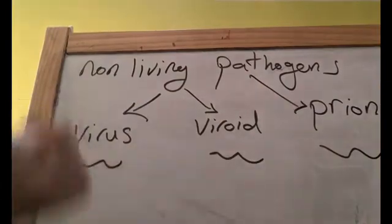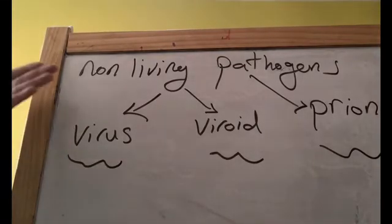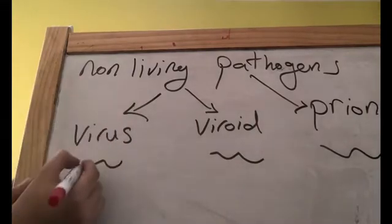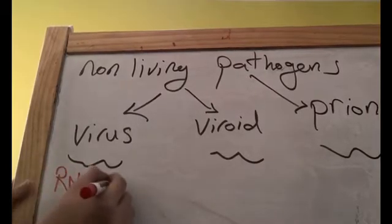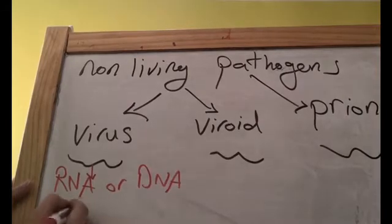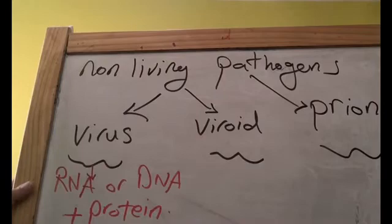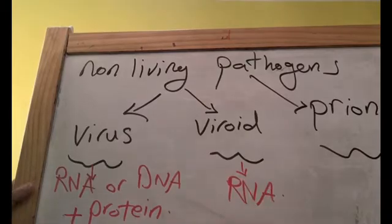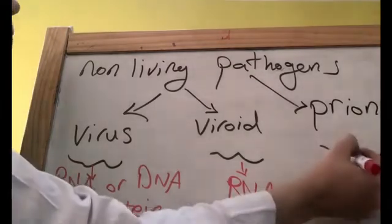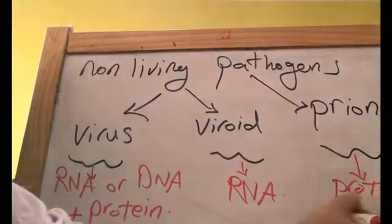Let's talk about the composition of the three types of pathogenic particles. They are particles because they are non-living. Number one, virus. It's composed of RNA or DNA plus protein. What about viroid? Viroid: only one strand of RNA. What about prion? Prion: only protein.